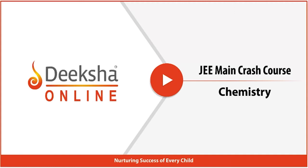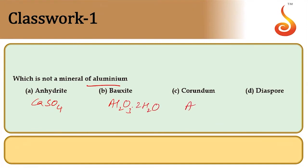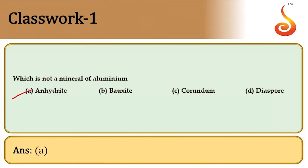Welcome to Deeksha Online. Today we discuss objective questions from p-block — 13th and 14th group elements. First: which is not a mineral of aluminium? Anhydrite is calcium sulfate; bauxite is Al₂O₃·2H₂O; corundum is Al₂O₃; diaspore is Al₂O₃·H₂O. All except anhydrite contain aluminium. Answer is option A.